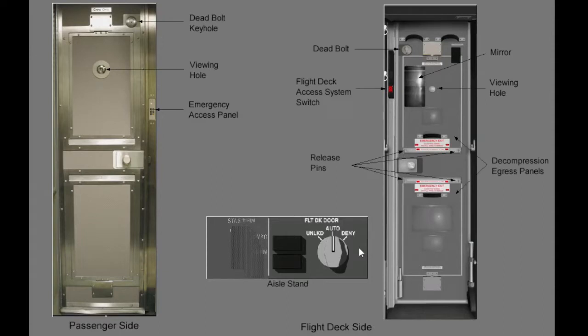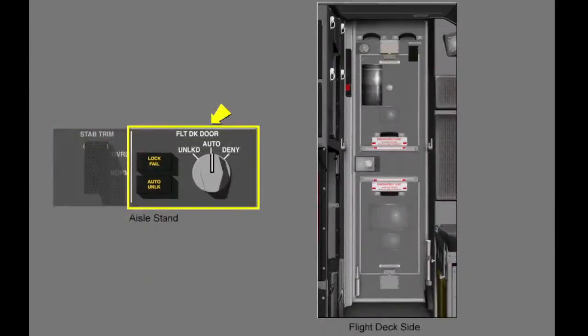The controls and indicators are located on both the passenger and flight deck side. The flight deck side consists of indicator lights and a flight deck door selector on the aisle stand.